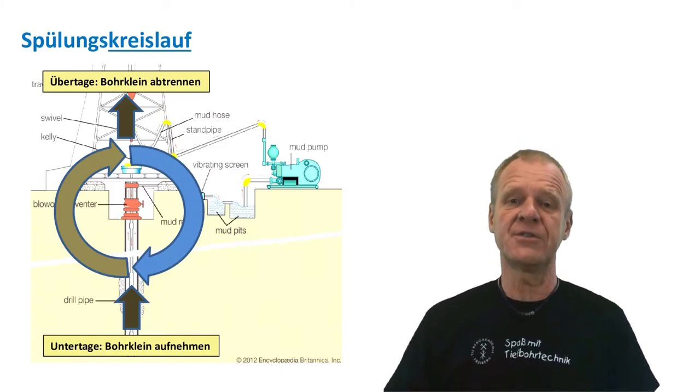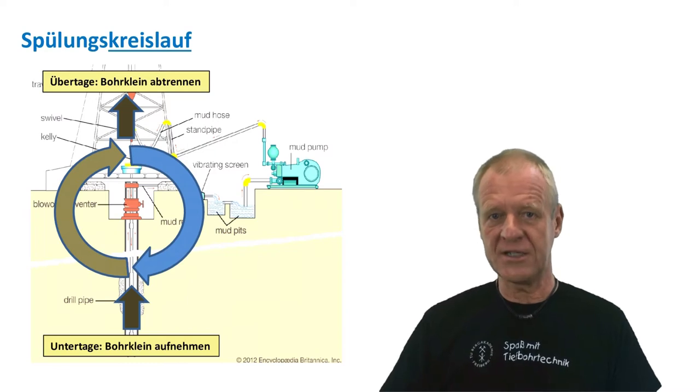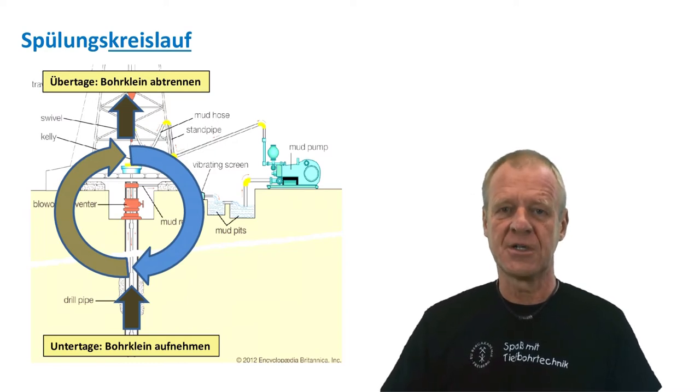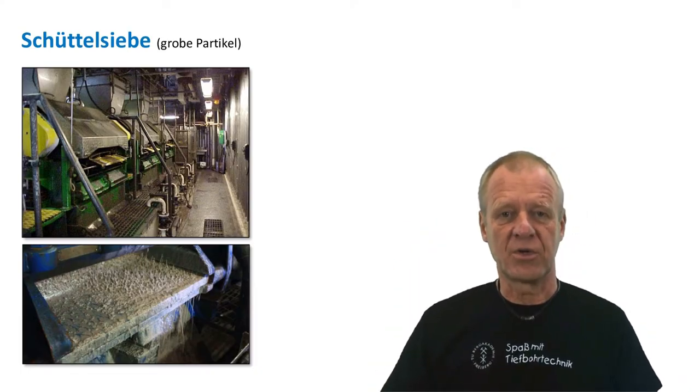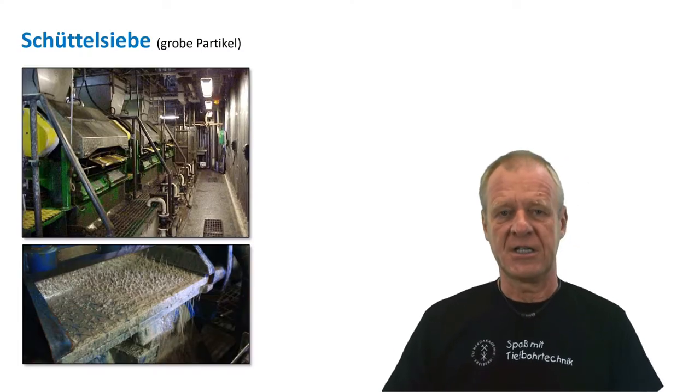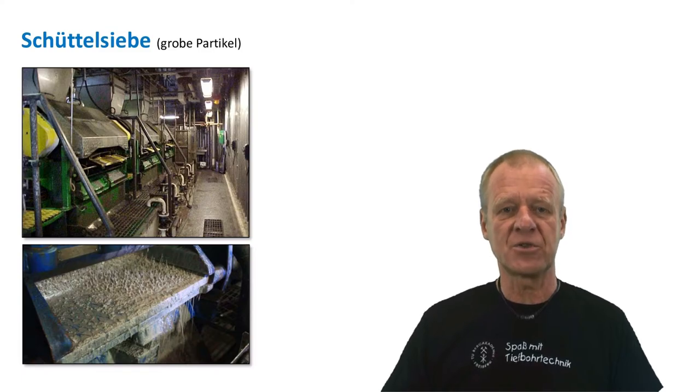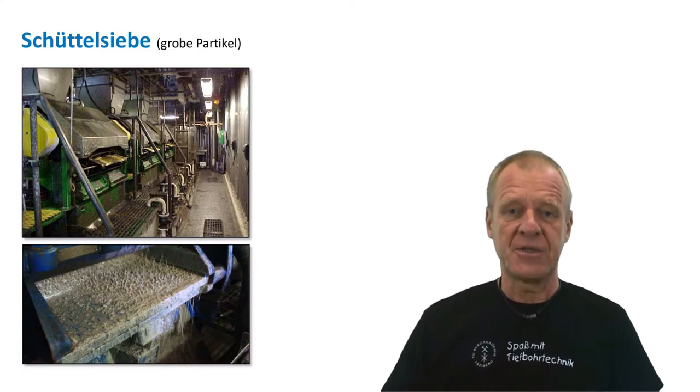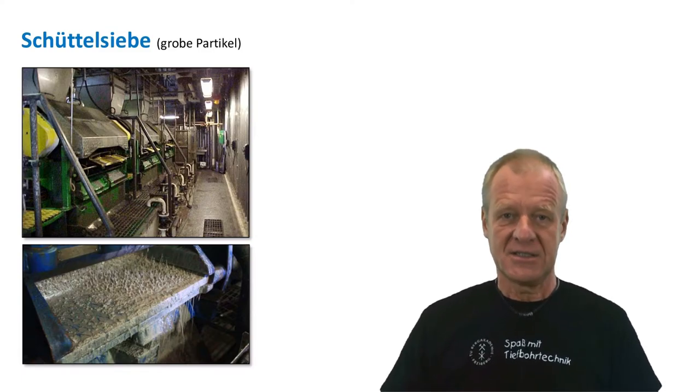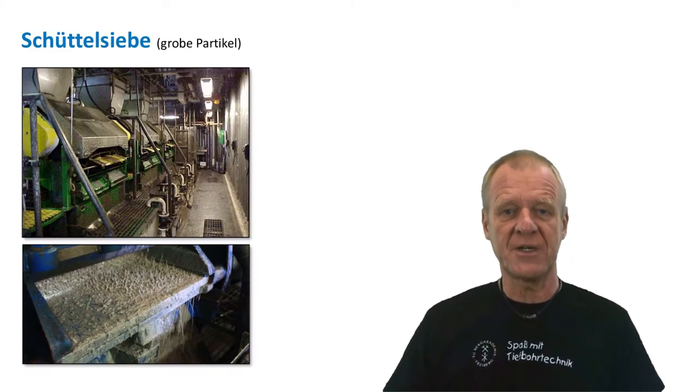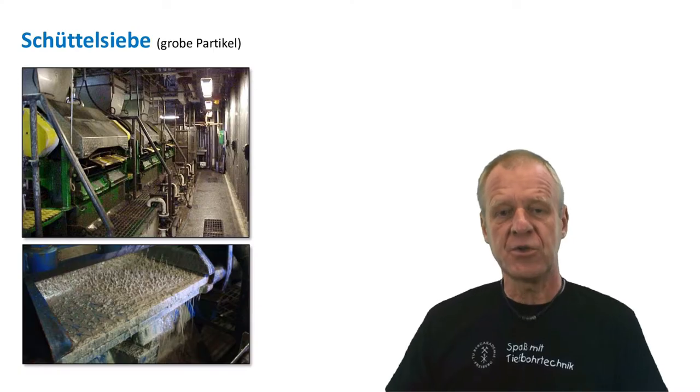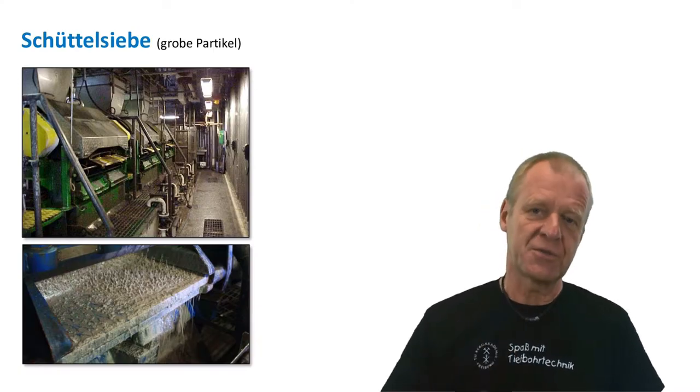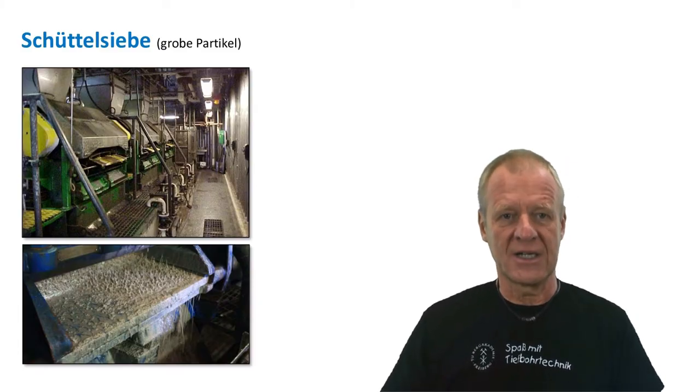Today we want to talk about how the drill cuttings are separated from the mud. The big particles are simply removed from the mud by using sieves as you can see. We all know sieves so we don't need to talk so much about them. But there are also very many fine particles for which the sieves cannot work because the fine particles will simply pass through the sieves and stay in the mud. So today we want to look at how we can remove these fine particles from the mud.